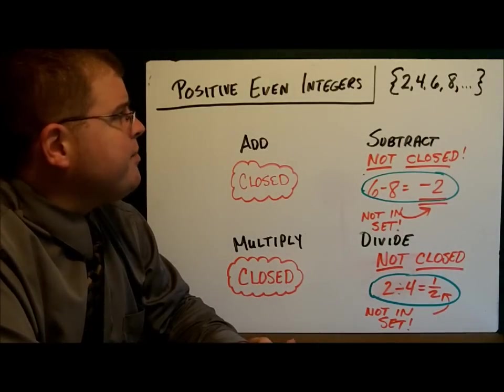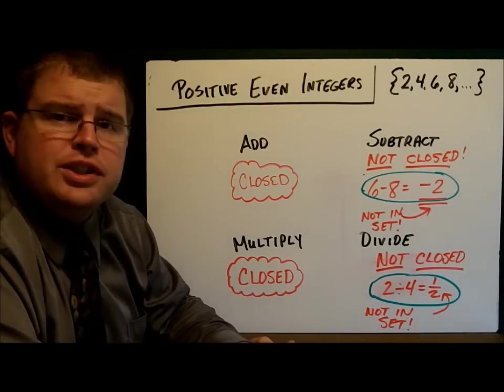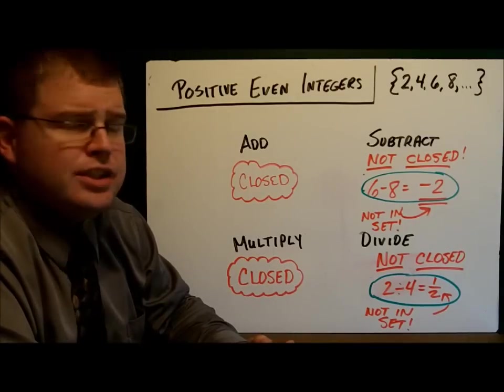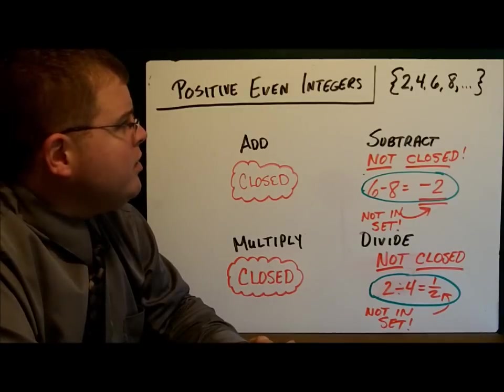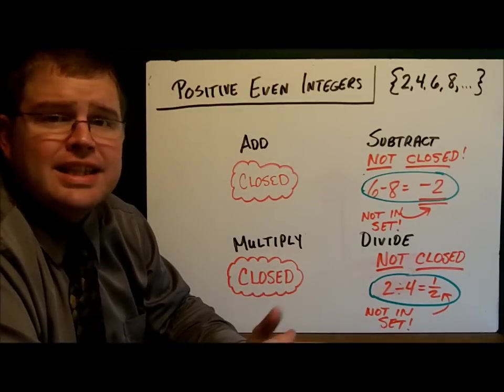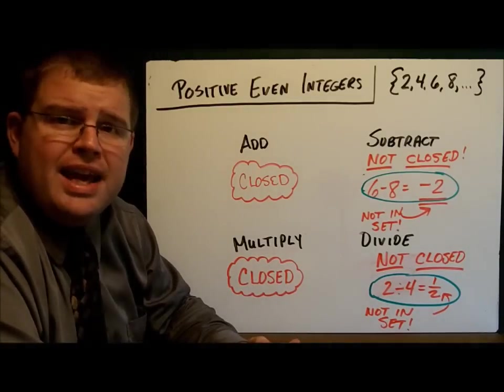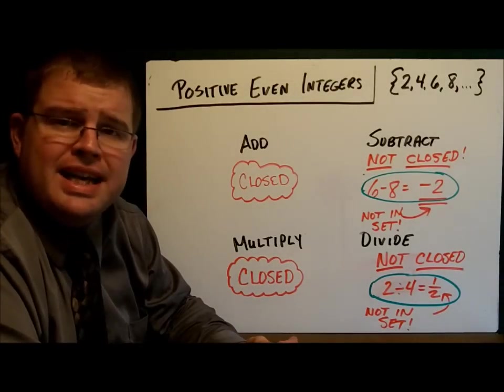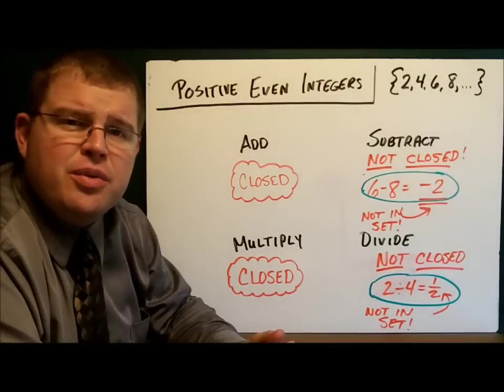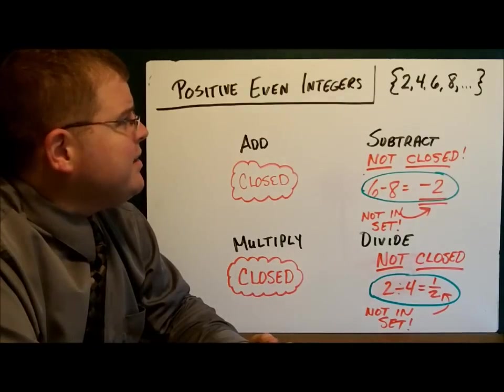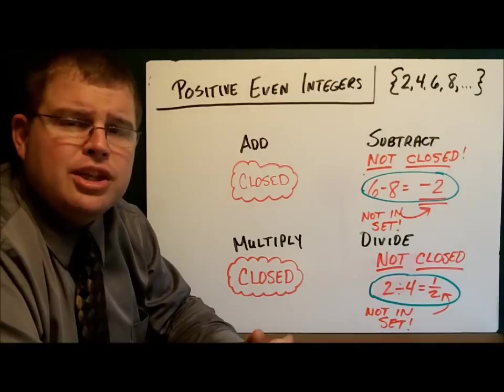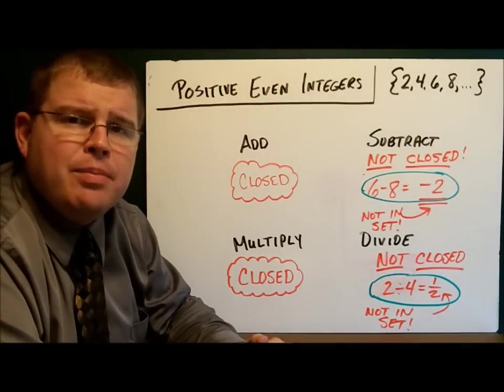What about subtraction? 6 minus 4 is 2. 8 minus 6 is 2. 8 minus 2 is, oh, 8 minus 2, 4. Or, oh, no, 6. 8 minus 2 is 6. I can't subtract today. Too excited about the game. What about 6 minus 8, negative 2? 6 minus 8 is negative 2. And that's not in the set. So it's not closed under subtraction. You found one example that didn't work.